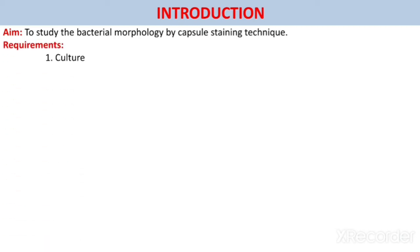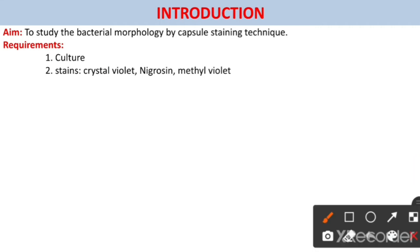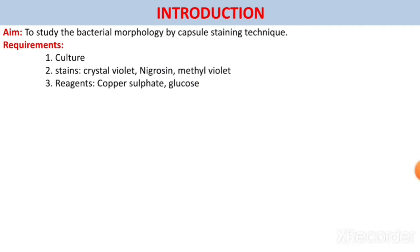Now what are the requirements? First requirement is the microbial culture in which we are interested. Second, stains. Now here we can use crystal violet, nigrosin, and methyl violet. Reagents: copper sulfate and glucose.